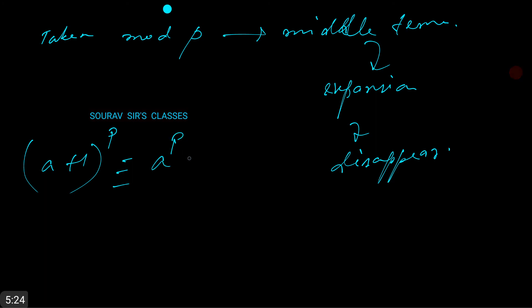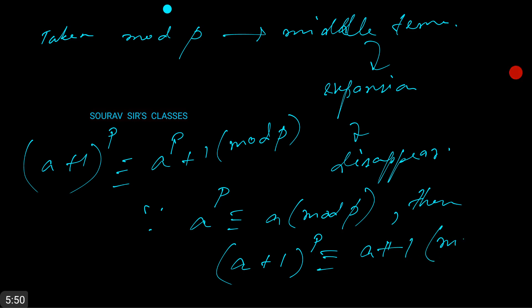Now since we know a to the power p is congruent to a mod p, then a plus 1 to the power p is congruent to a plus 1 mod p as desired. This is our general result which we have arrived by induction.